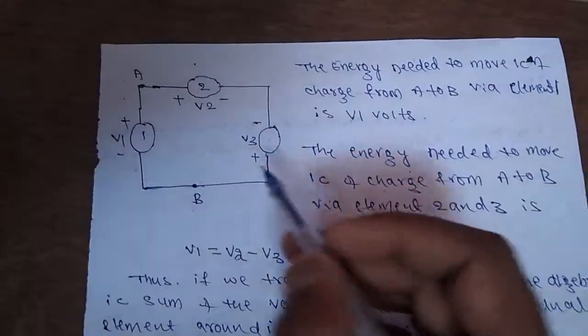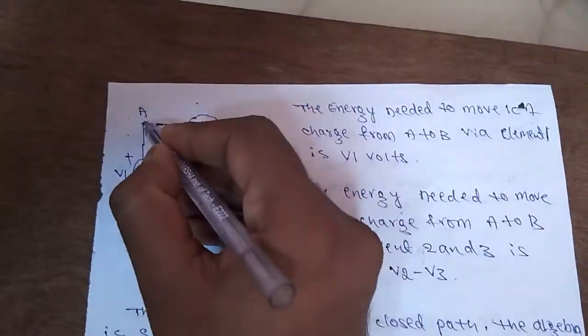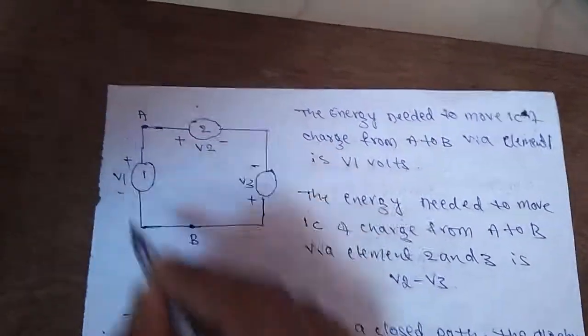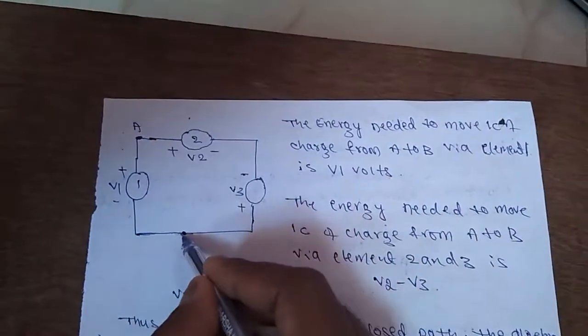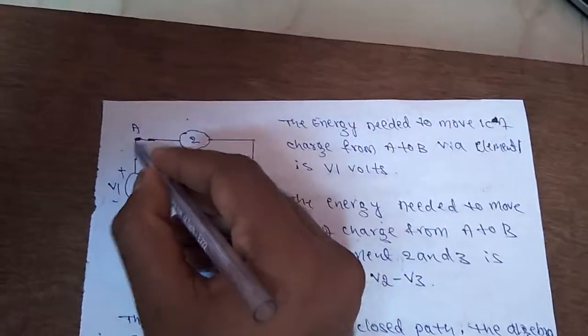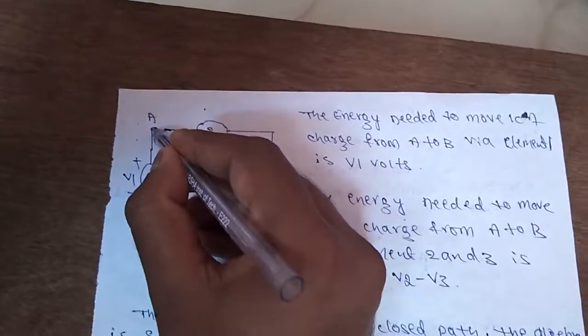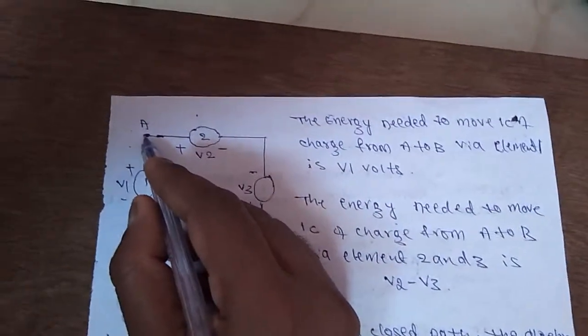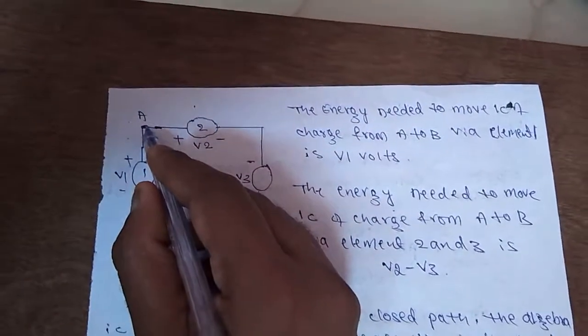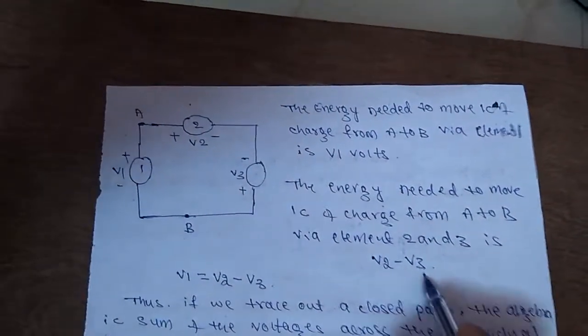If you consider this diagram, and I am going to move a unit charge from point A to point B, through this V1, then the amount of energy needed to move this A to B is V1 volts. That is, since the voltage across A and B will be V1, the amount of energy needed to move unit charge from A to B is V1. And that should be equal to the amount of energy needed to move a unit charge from point A to B, through V2 and V3. That is given by V2 and V2 minus V3.